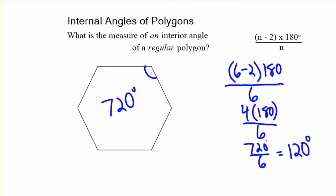I didn't write my degree symbol. I need to make sure I do that. But that's all we have to do. So, you can use the formula to find one interior angle of a regular polygon. We'll see you next time.